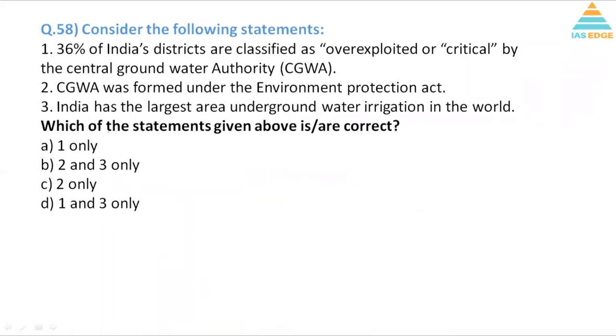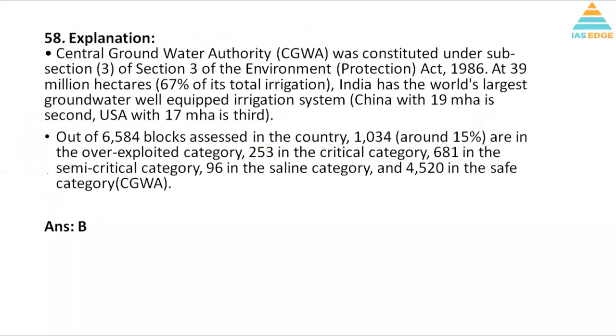Again a question from geography. Consider the following statements: 36% of India's districts are classified as over-exploited or critical by Central Groundwater Authority. Now it is not 36%, this is a little too high. It is around 15 to 16% that are over-exploited. CGWA was formed under Environment Protection Act - that is correct. India has the largest area under underground water irrigation in the world. So one is incorrect, so B is the right answer. It's a factual question again. If you have read this properly then only you will resolve the question. 15% are in over-exploited category.